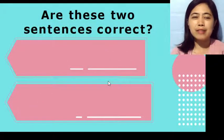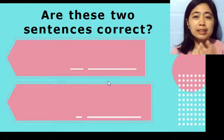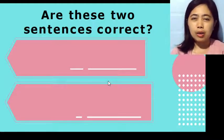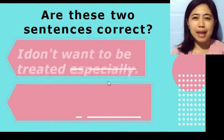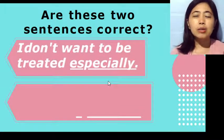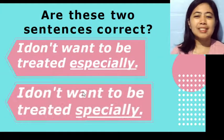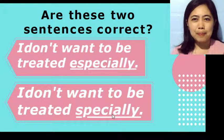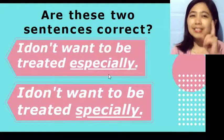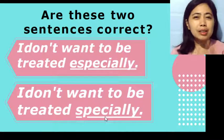The first question we have here — let's try to see if you can distinguish which of these sentences are correct. The first sentence is: 'I don't want to be treated especially.' The other one is: 'I don't want to be treated specially.' We'll discuss the difference between especially and specially first, then we'll get back to this to find out the correct answer.